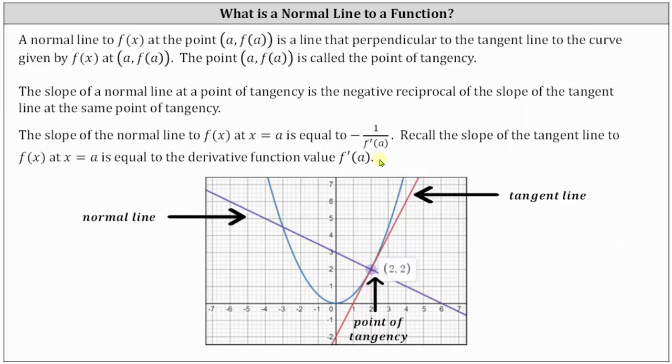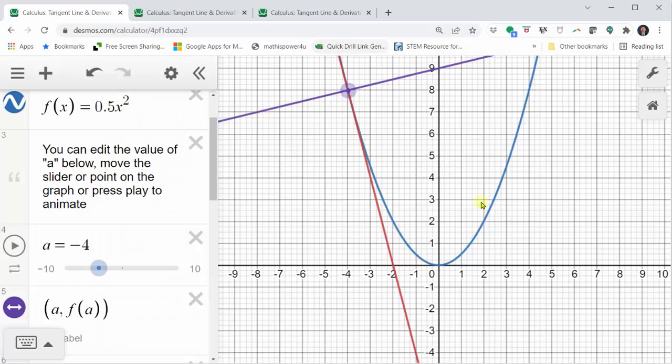Let's take a look at several animations that show the normal line and the tangent line. First we have a quadratic function graphed in blue. The red line is tangent to the blue curve at the purple point, the point of tangency.